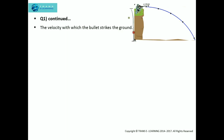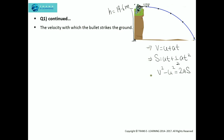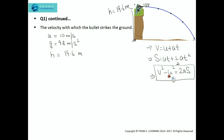Now that we've found the height of the cliff as 19.6 meters, we need to find the velocity with which the bullet hits the ground. For this we use the SUVAT equations — specifically we choose the most appropriate one. Given that u is 10 m/s, g is 9.8 m/s², and height s is 19.6 m, the appropriate equation is v² = u² + 2as, since u, a, and s are all given.